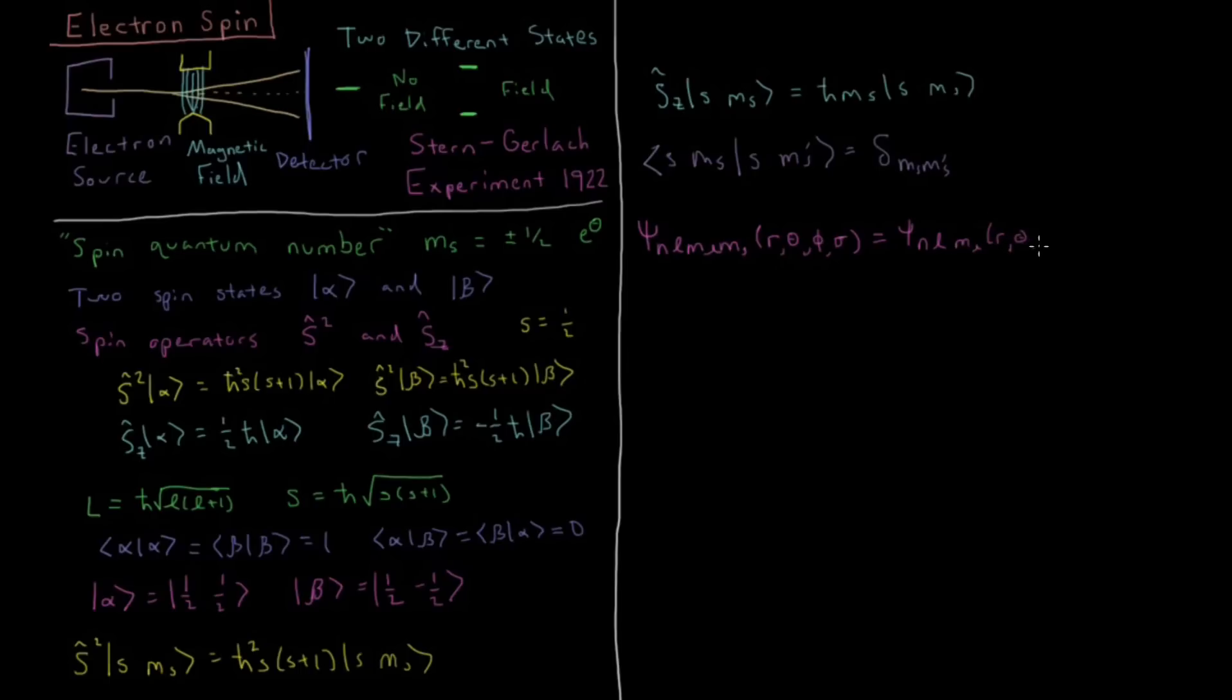And that's going to be the Psi of N L M sub L of R, theta, and phi that we're used to, and then times the function omega of sigma, the spin coordinate, where omega is going to be either alpha or beta.